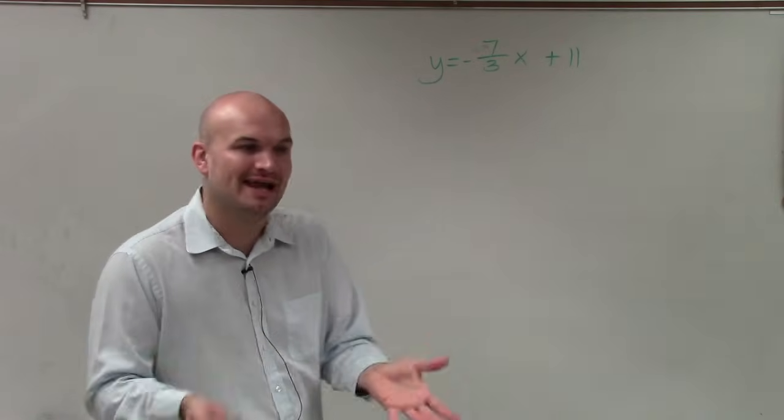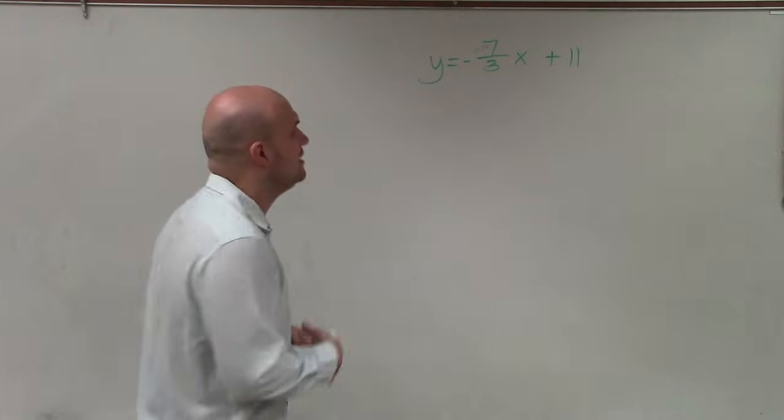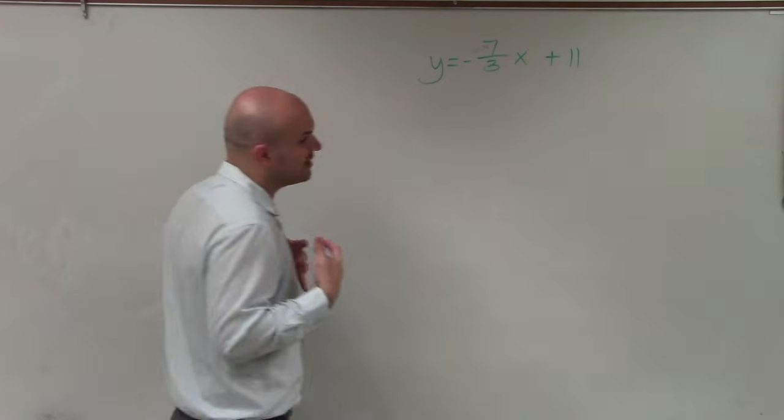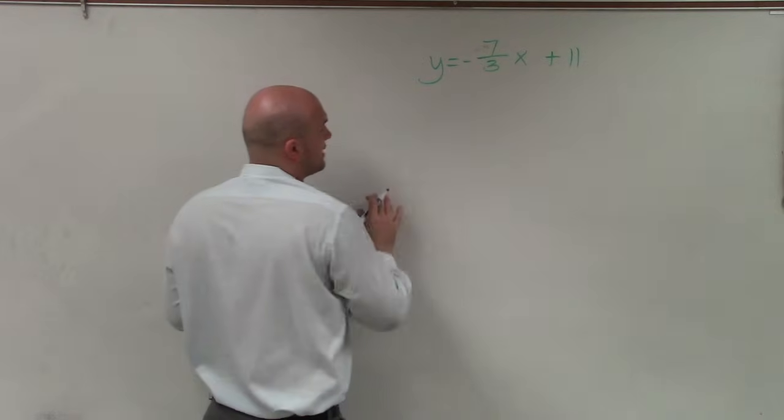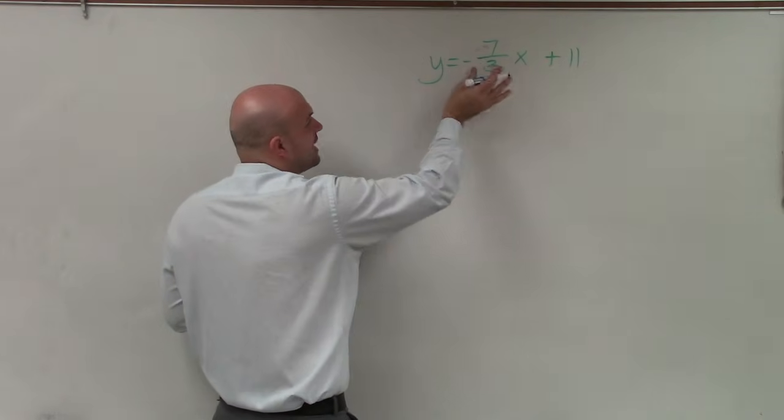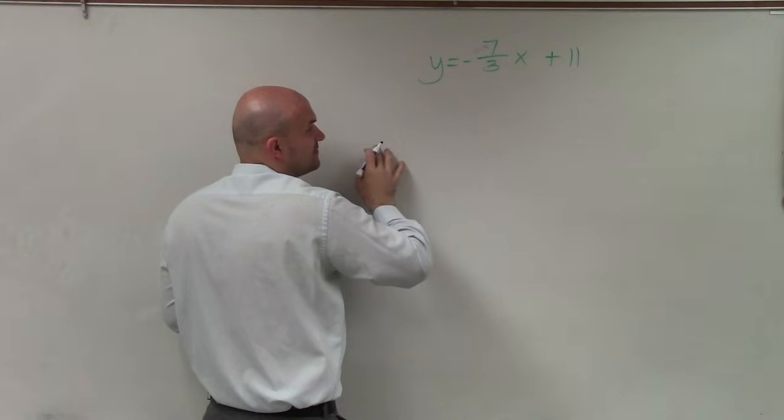And it's just going to be our rate of change between any two points. So let's go through the components that we need for slope-intercept form. We first need to identify what the y-intercept is, which is 11, and then what the slope is, which is negative 7 thirds.